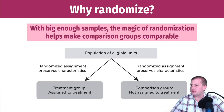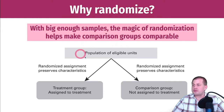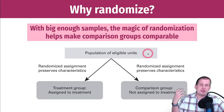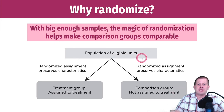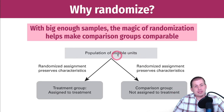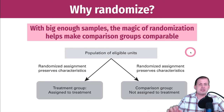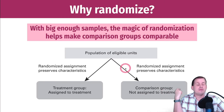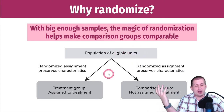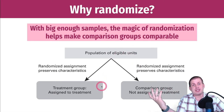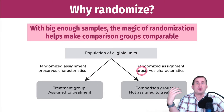This is what we saw in the World Bank reading. You have some sort of population of eligible units, whether it be people or households or cities or whatever. Then you randomly assign this population to treatment or to control — or comparison groups, as the World Bank calls them. As long as you have big enough samples and well-randomized assignment, your average treatment effect calculated in this randomized control trial will be accurate.